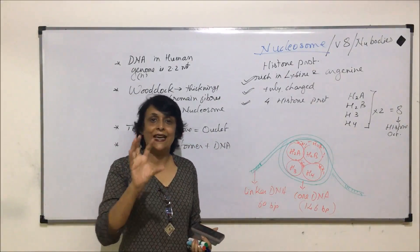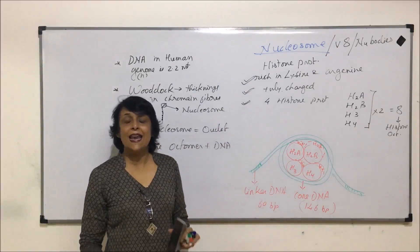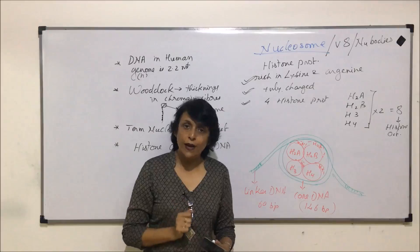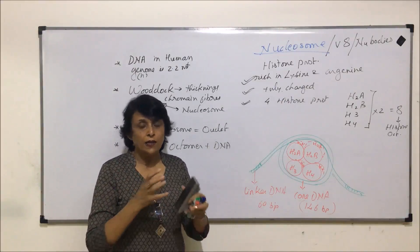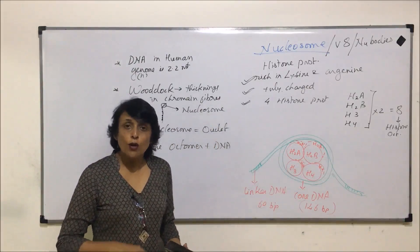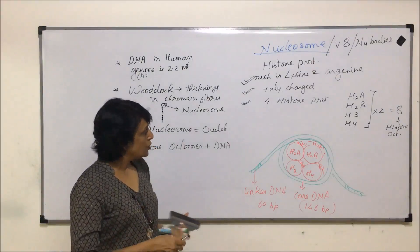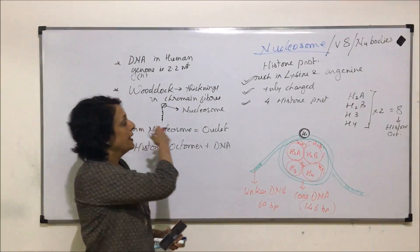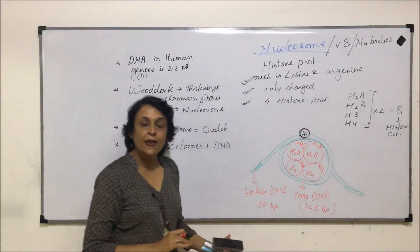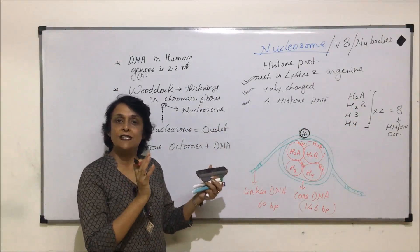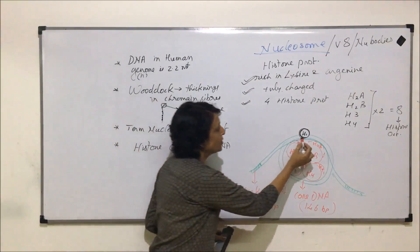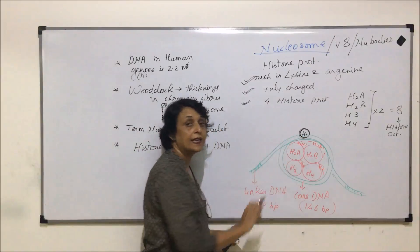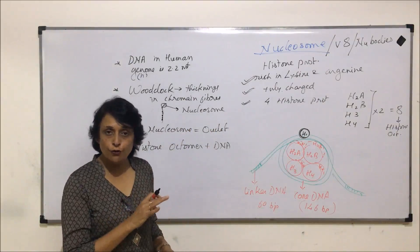The DNA between one histone octamer and the next is known as linker DNA, and this linker DNA has approximately 60 base pairs. Now, if we imagine the 8 histone proteins as 8 balls held together by a ribbon wrapped around them, as soon as we let go of the ribbon the balls would fall apart. So there has to be a clamp to hold the structure together. On top of the octamer there is one more histone protein called H1, which acts as this clamp. However, H1 is not inherited when DNA is passed on.